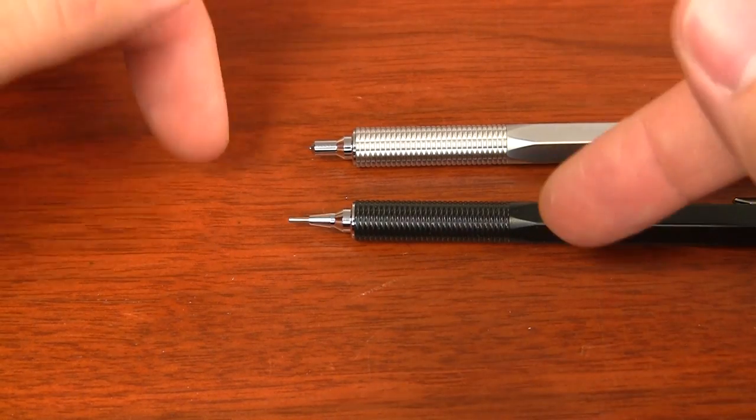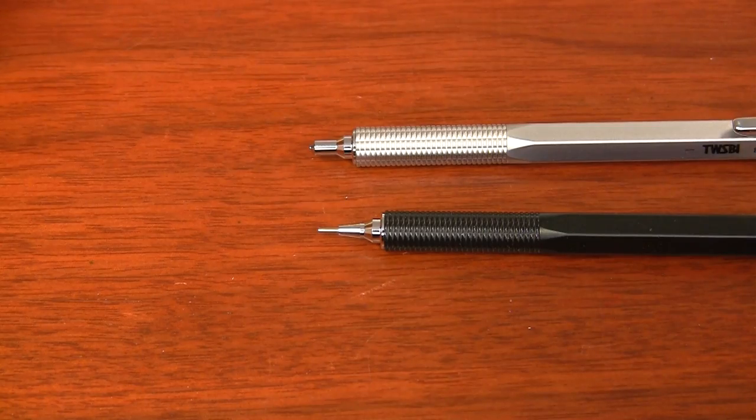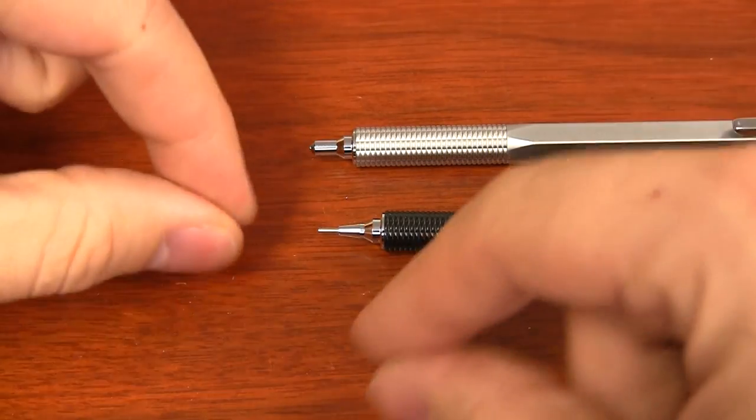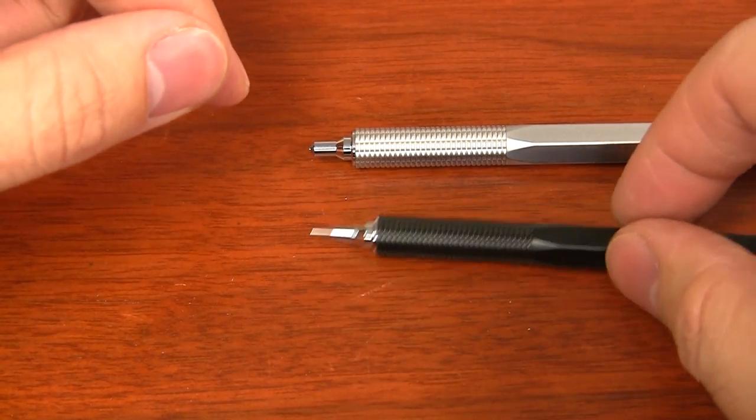But what's the idea behind retractable versus not? Well, the non-retractable is more like a drafting type pencil. It's meant for precision. It doesn't wobble. It doesn't move at all. It's very precise. And actually, I prefer to write with the fixed one.